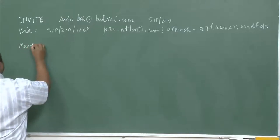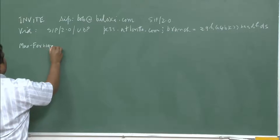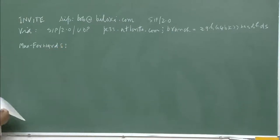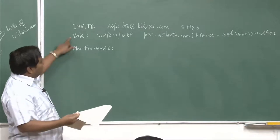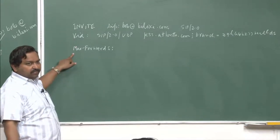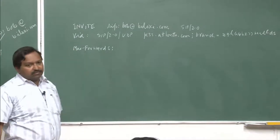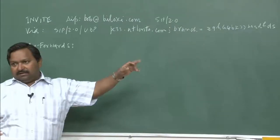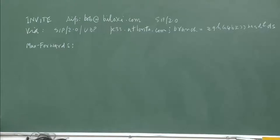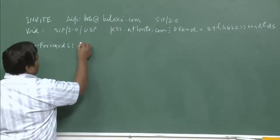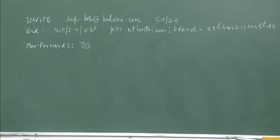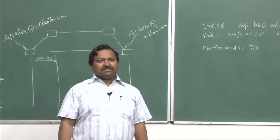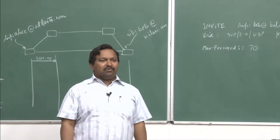The first letter of each header field is always capital, and the attribute's value comes after a colon. Most header fields usually come on one line. Max-Forwards tells how many times this request can be forwarded further — since SIP proxies can keep on doing handovers, each time you forward you reduce this number by 1. When it becomes 0, you no more forward it. This is like the time-to-live field.